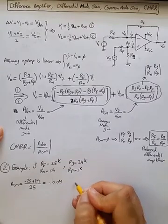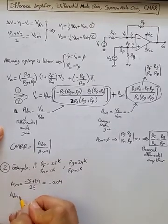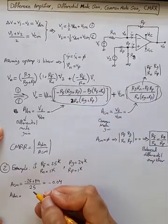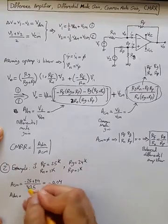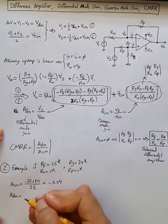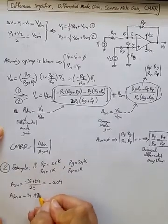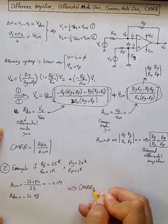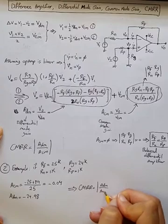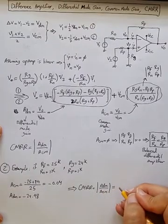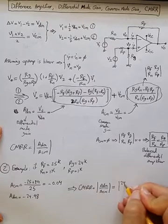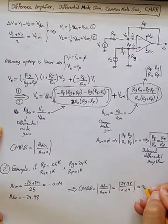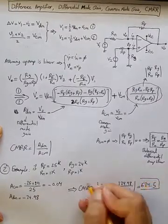For the differential mode gain, we can have ADM using what we have here. If we calculate and replace the values, you can get minus 24.98. From these two, CMRR is ADM over ACM, and is equal to 24.98 divided by 0.04, which equals 624.5. That's the CMRR.